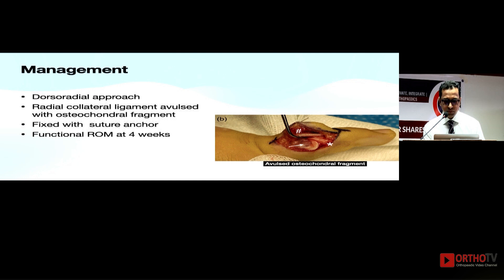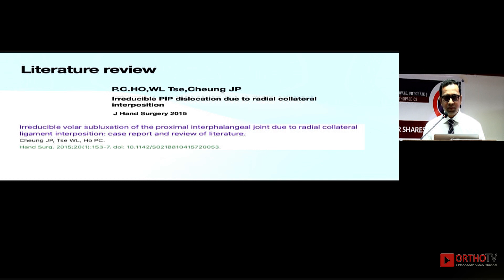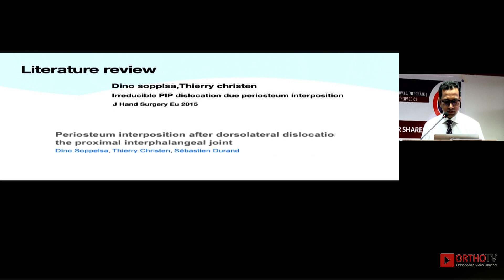In this same case, a dorsal-radial approach was used. The avulsion was from the head of the proximal phalanx, which was fixed with a suture anchor, and full functional range was achieved at four weeks. Looking at the literature, multiple case reports exist because these injuries are rare — not common like dorsal dislocation. In all the reviewed case reports, close reduction was attempted and failed due to some entrapment. One index case from the literature showed the radial collateral itself entrapped in the joint. The same approach was used to fix with a suture anchor. Another case involved an osteochondral fragment interposed in the joint, removed surgically and fixed with suture anchors.